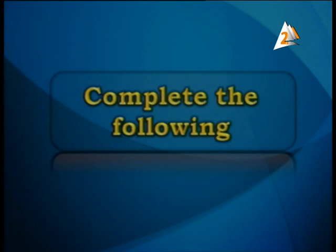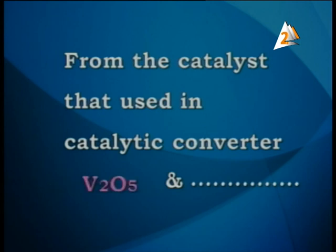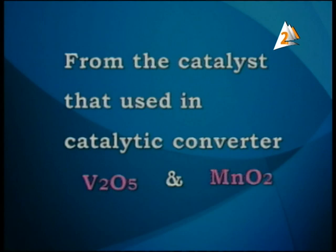Now we have another type of question — complete the following. Number 1: the catalyst used in a catalytic converter. A catalytic converter is a part found in modern cars. Examples include V₂O₅ (vanadium pentoxide) and MnO₂ (manganese dioxide).